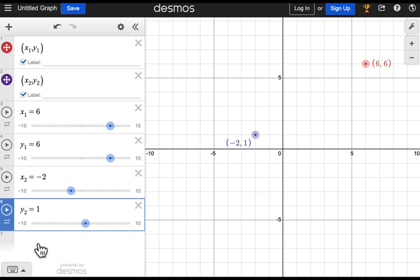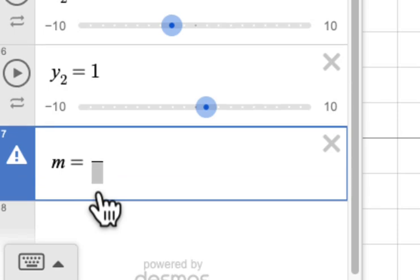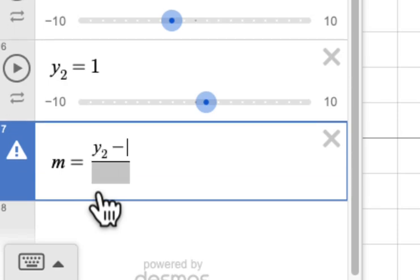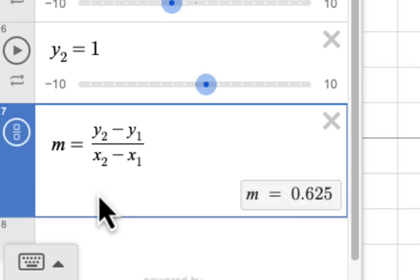Now create an equation that shows the slope formula like this. And then click on the slash to create a fraction y2 minus y1 in the numerator and x2 minus x1 in the denominator.